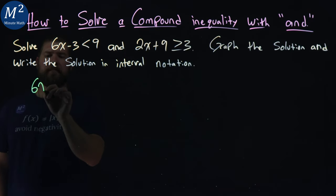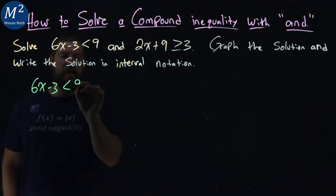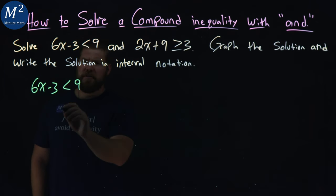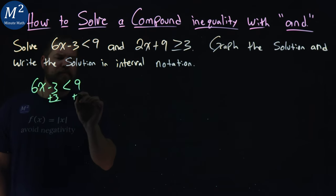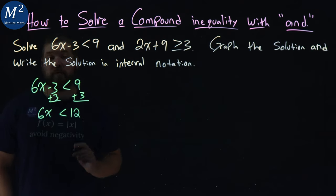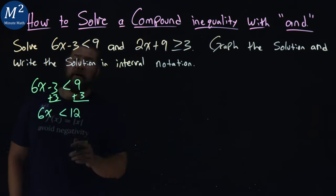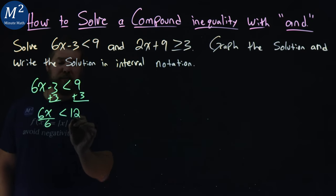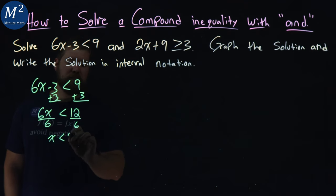So first, let's solve each one of these inequalities individually. Let's start with 6x minus 3 is less than 9. I'll add 3 to both sides, and I have 6x is less than 9 plus 3, which is 12. Then we divide both sides by 6. x is less than 12 divided by 6, which is 2.